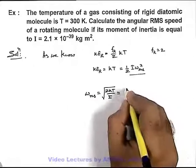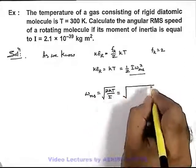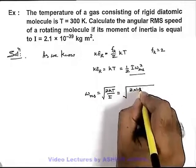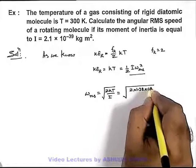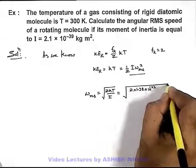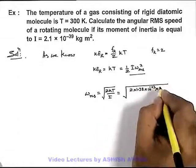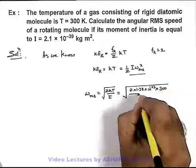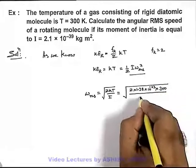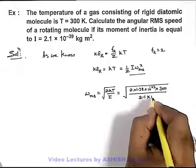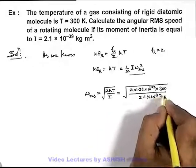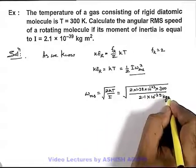If we substitute the values this will be root of 2 × 1.38 × 10⁻²³ multiplied by temperature here is 300 kelvin, divided by the moment of inertia is 2.1 × 10⁻³⁹ kilogram meter squared.